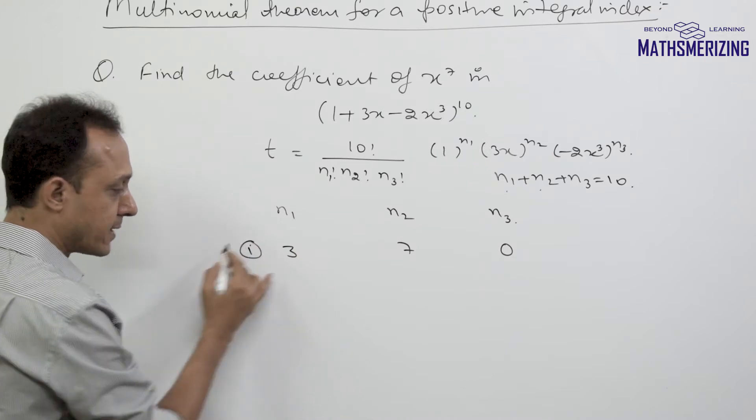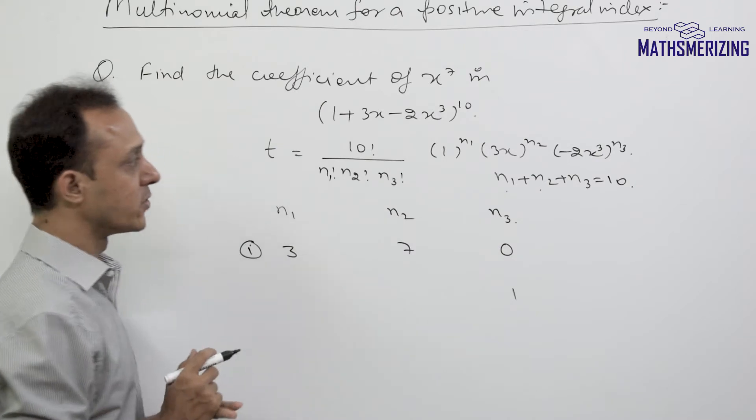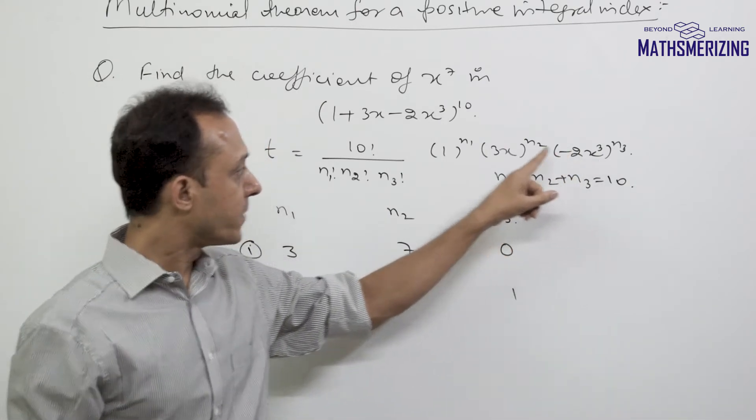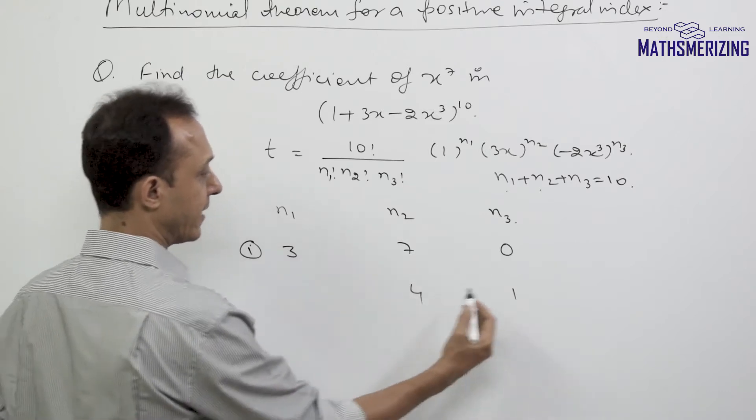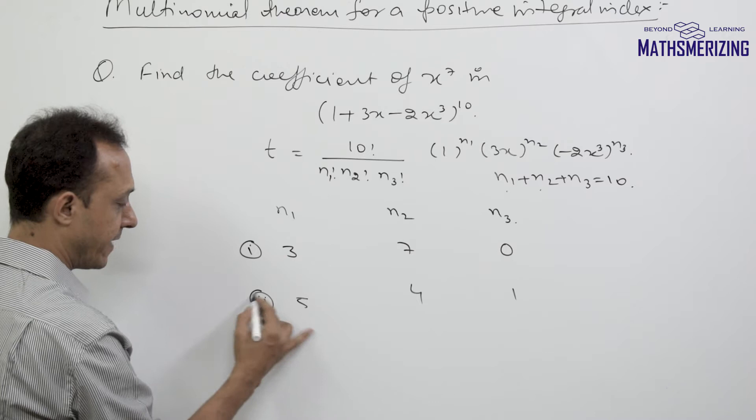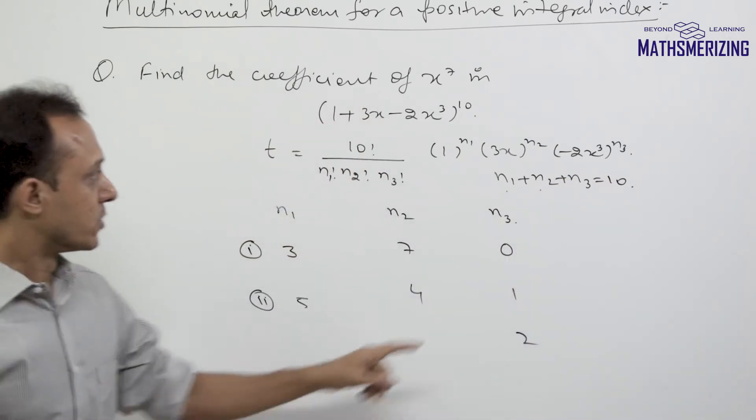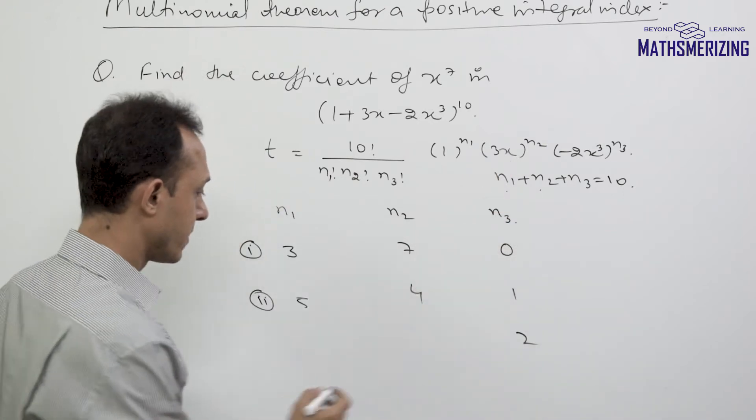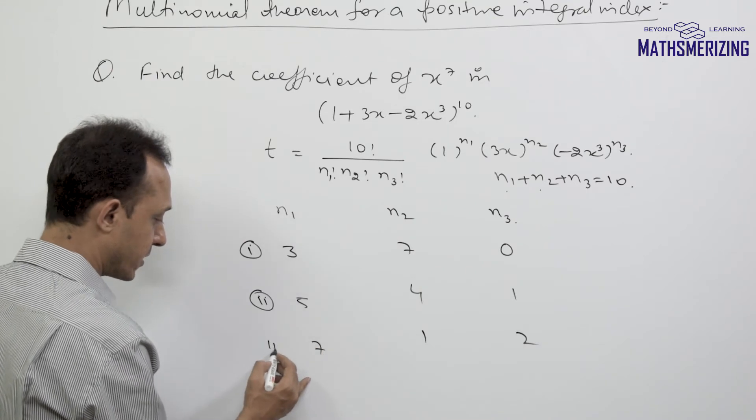Second possibility: if I take this value as 1, it'll be n2=4 and n1=5. The third one: if I take n3 as 2, I need 1 more to make it 7, so n2=1 and n1=7.